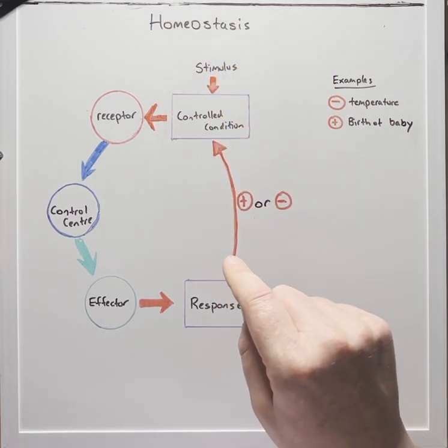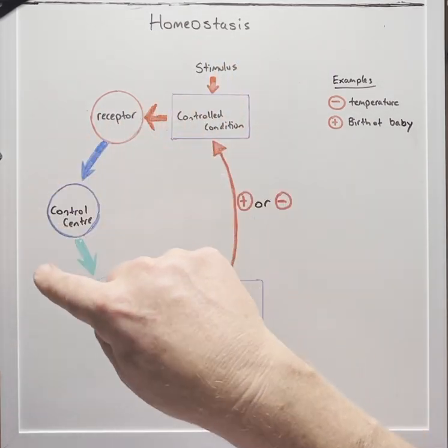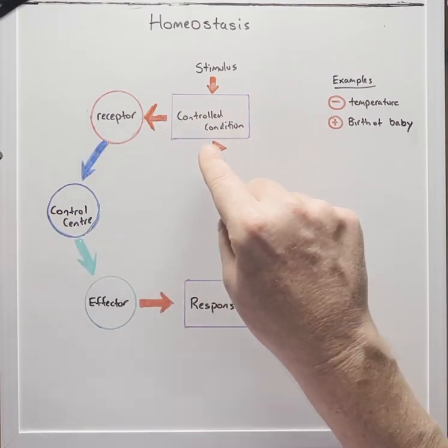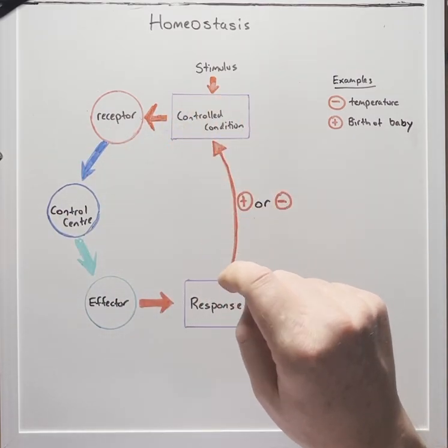Homeostasis can be seen as a feedback system or a feedback loop in which a change in control condition can be restored.